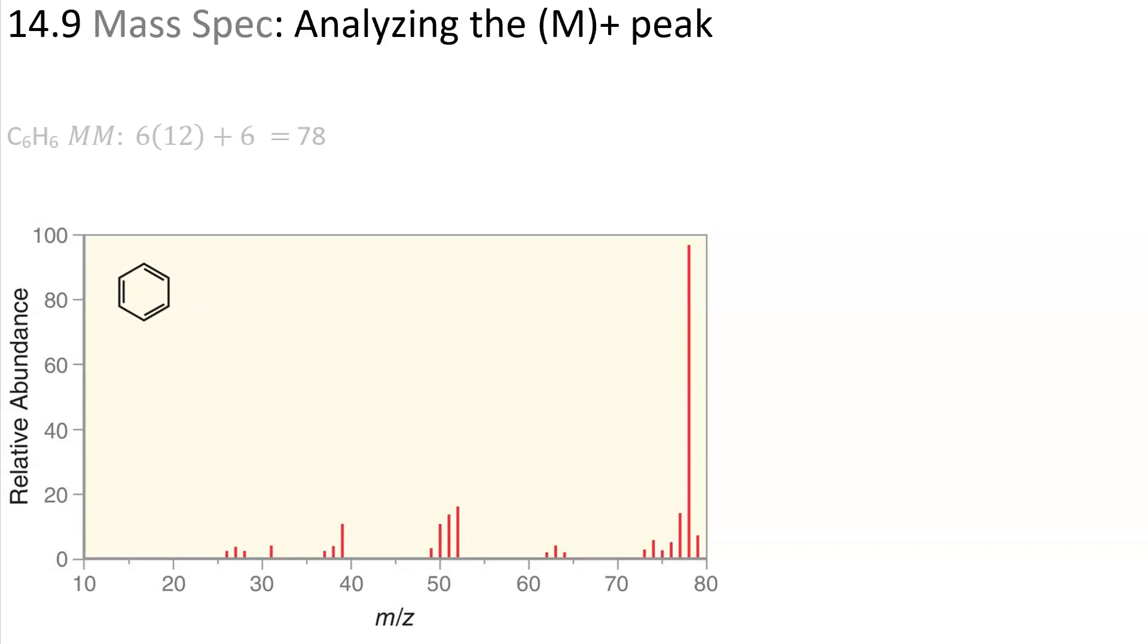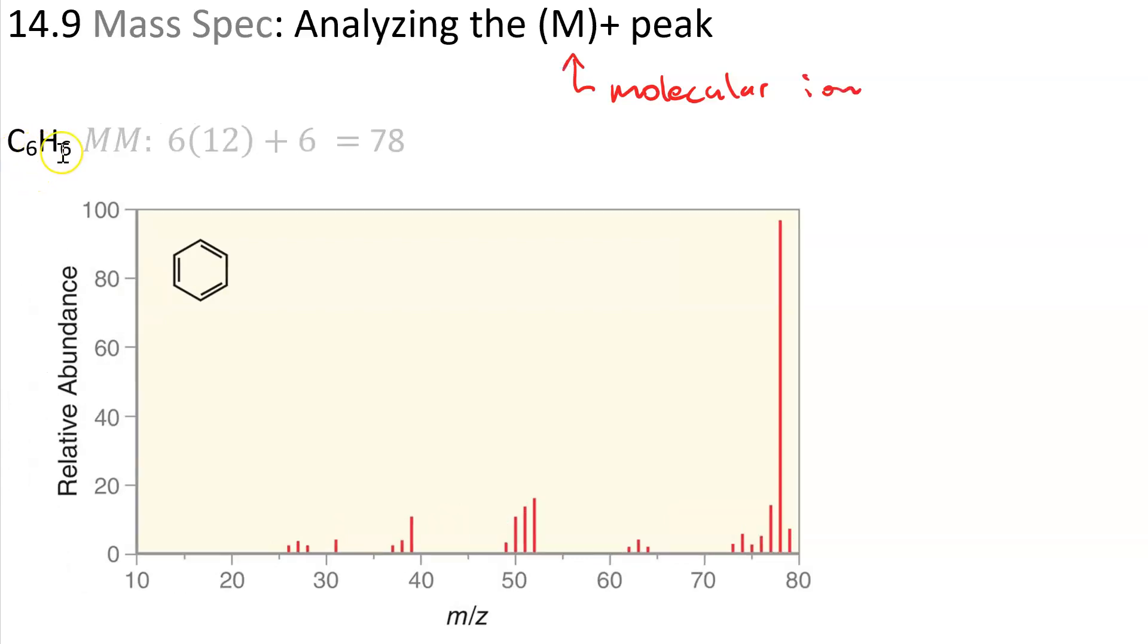Analyzing the M plus peak. M plus refers to the molecular ion. Consider benzene with the chemical formula C6H6. We'd expect to see the molecular ion peak at 6 times 12 for the six carbon atoms plus 6 times 1 for the six hydrogen atoms. That gives us 78, the molecular ion peak.